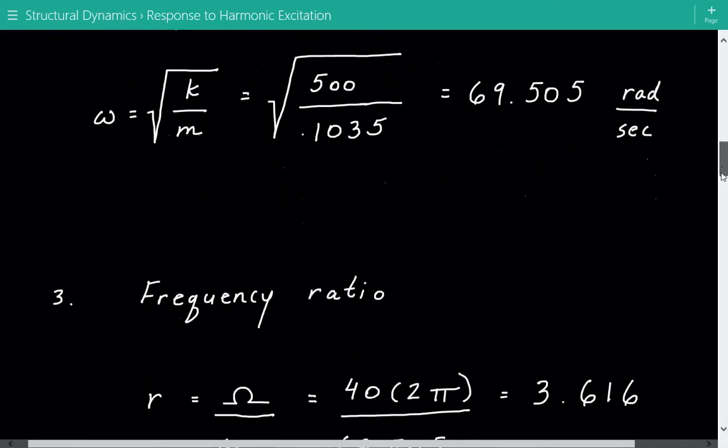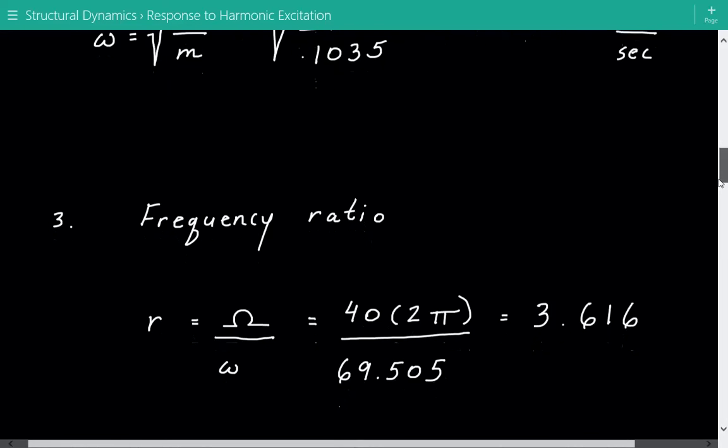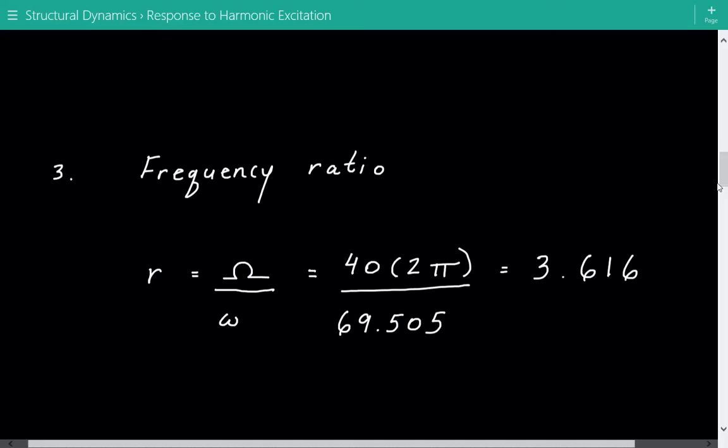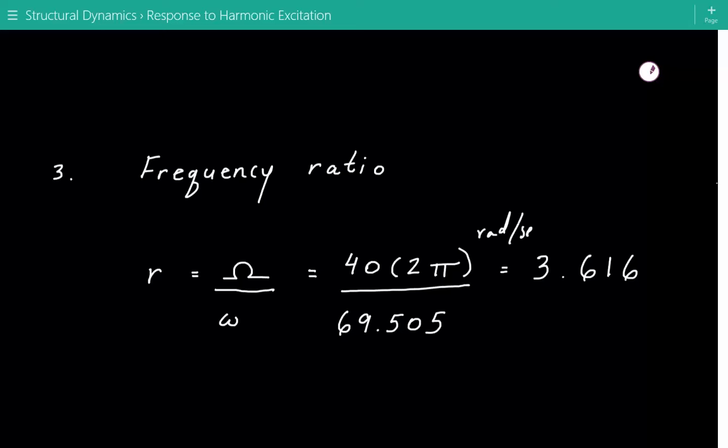After this we're going to calculate the frequency ratio, and that's equal to the excitation frequency, the operating frequency, or the vibration frequency of the vehicle, divided by the circular natural frequency of the instrument panel. The vehicle's vibrating at 40 Hertz, so we multiply by 2 pi to get it into radians per second, then divide by 69.505 radians per second. We get r, the frequency ratio, equal to 3.616.